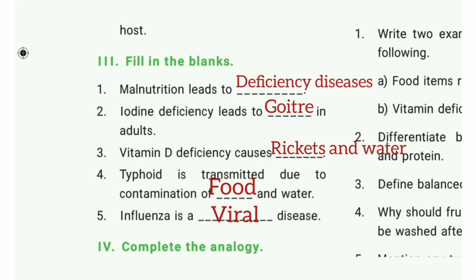Fill in the blanks. First one: more nutrition leads to dash. The answer is deficiency diseases. Second one: iodine deficiency leads to dash in adults. The answer is goitre. Third one: vitamin D deficiency causes dash. The answer is rickets. Fourth one: typhoid is transmitted due to contamination of food and water. The answer is food.